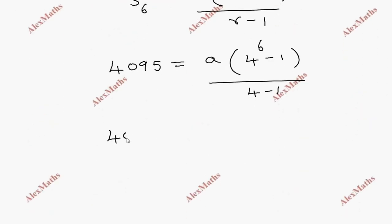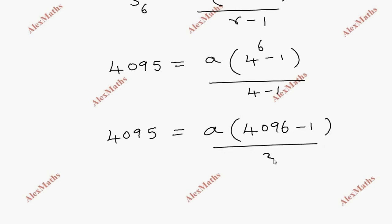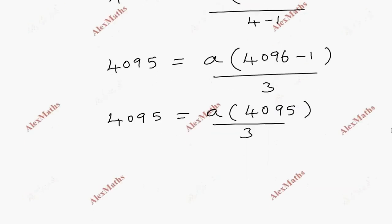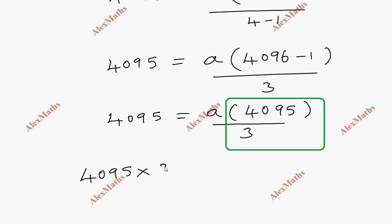Solving: 4095 = a × 4095/3, so a = 4095 × 3/4095 = 3. Therefore, the first term a = 3.